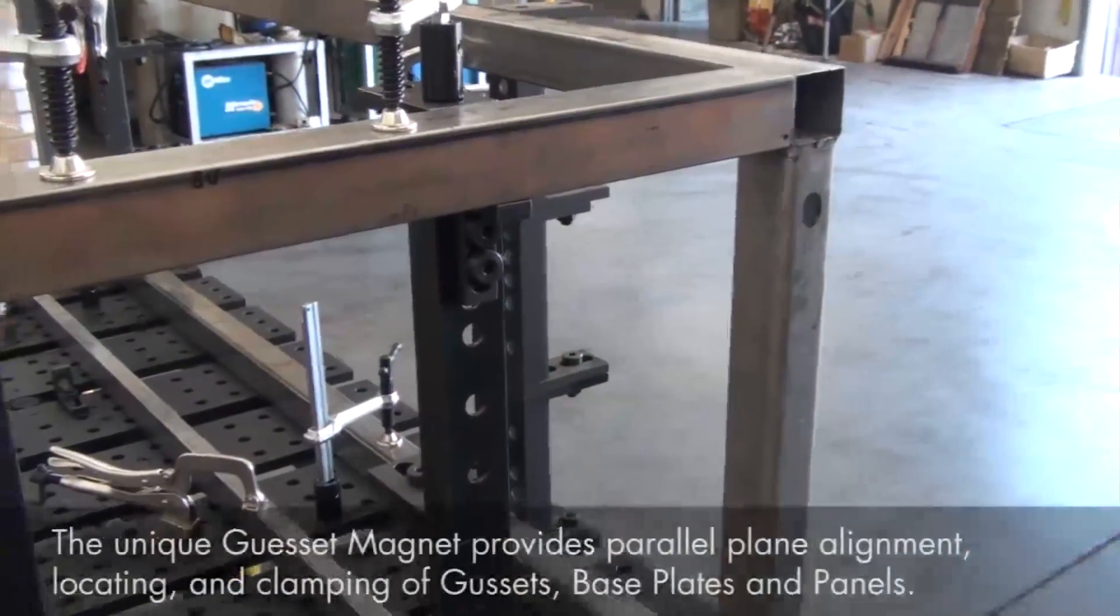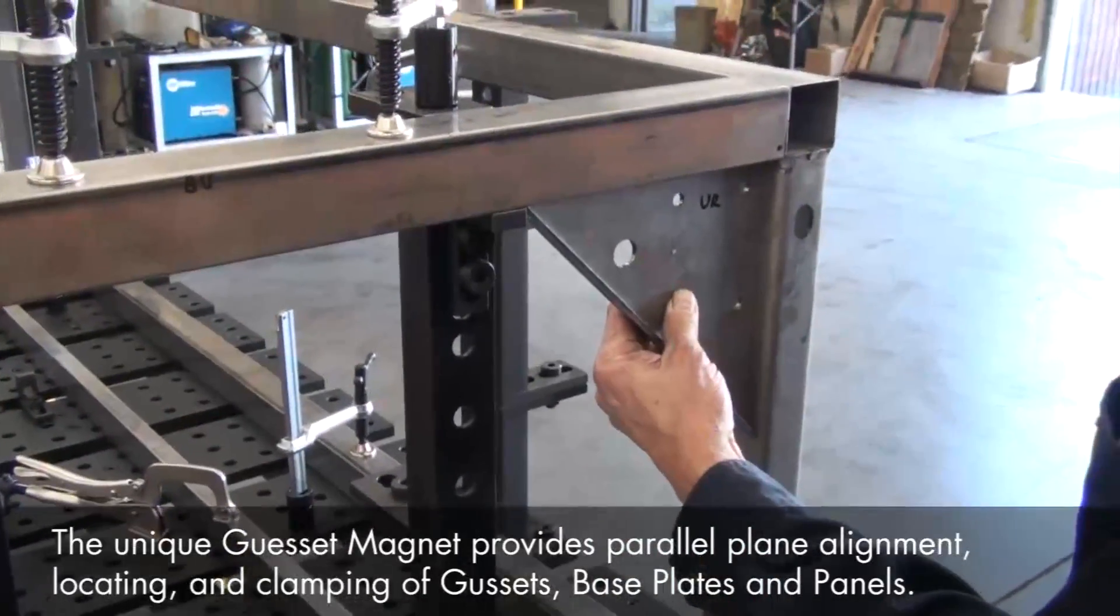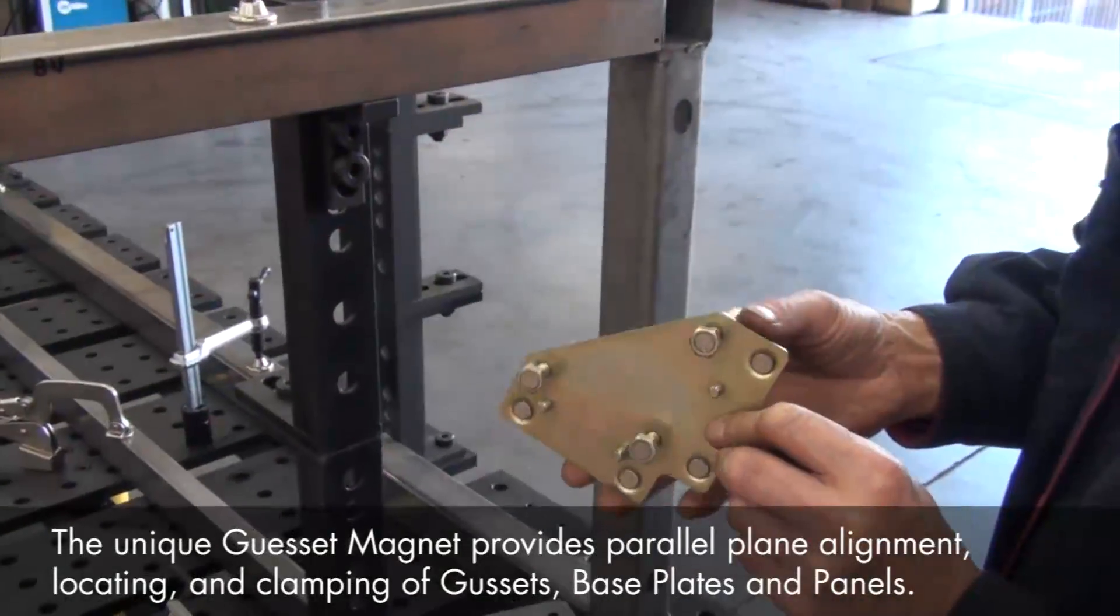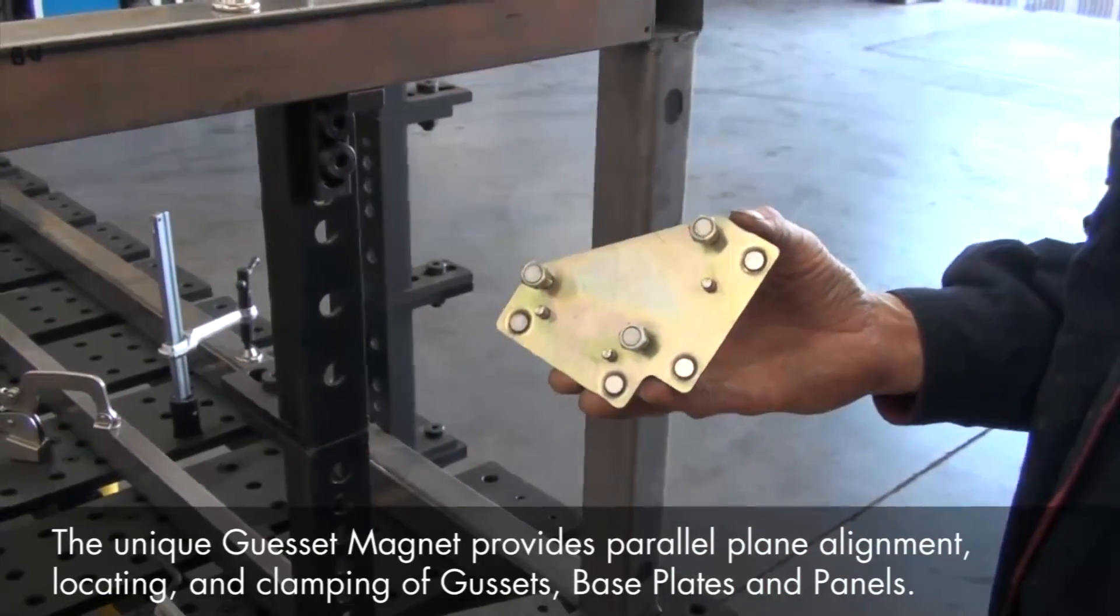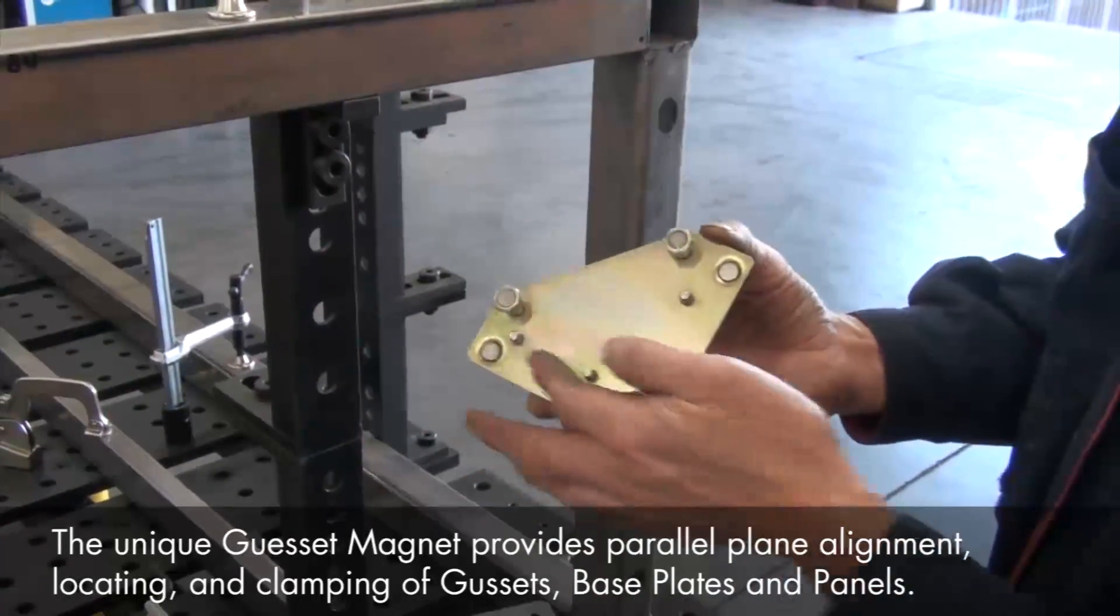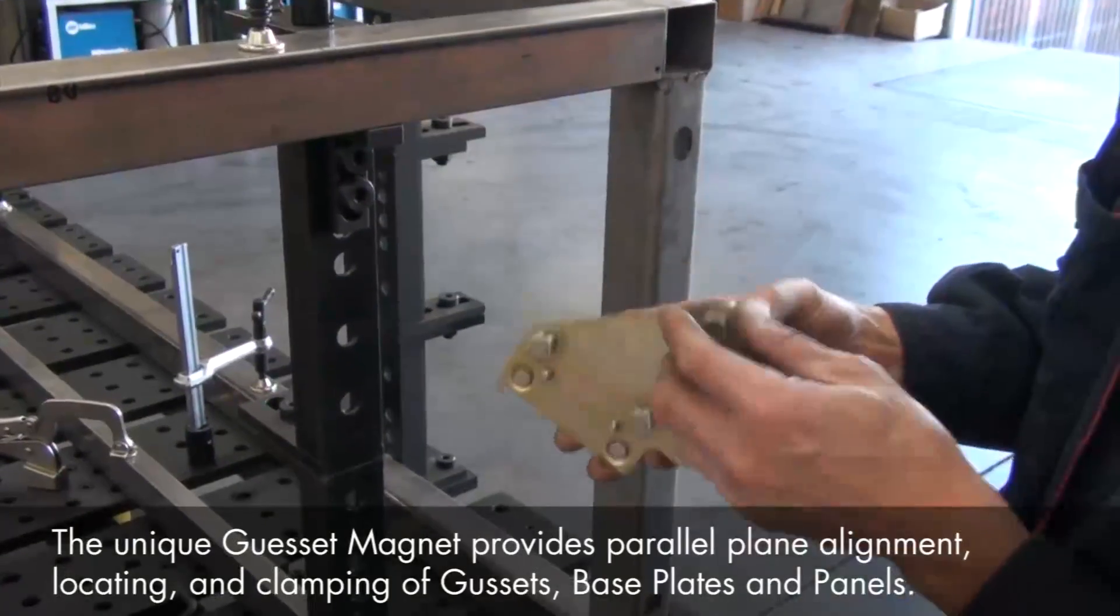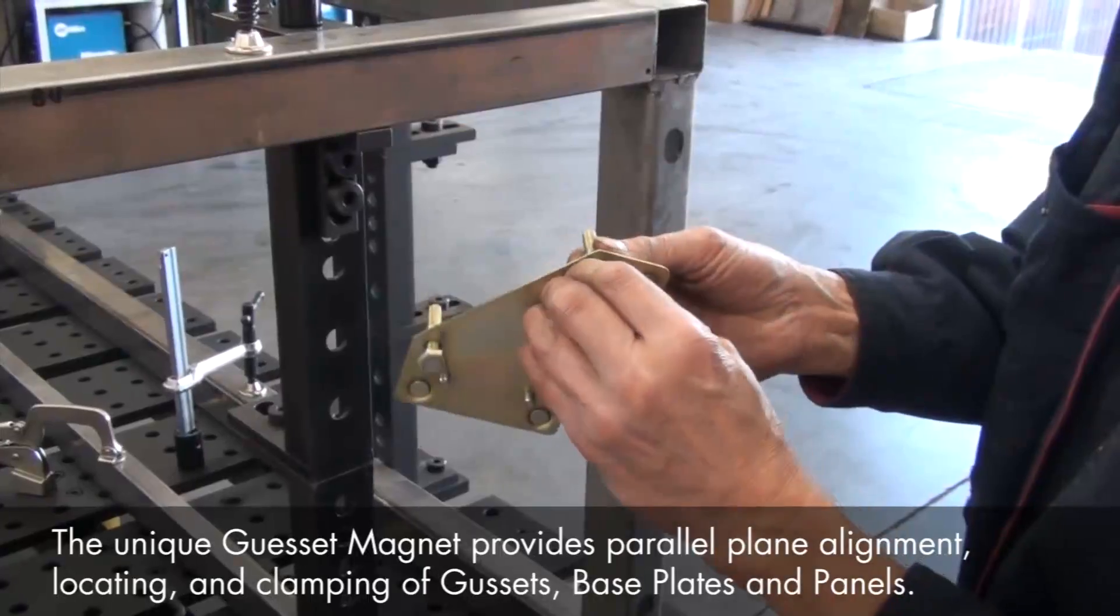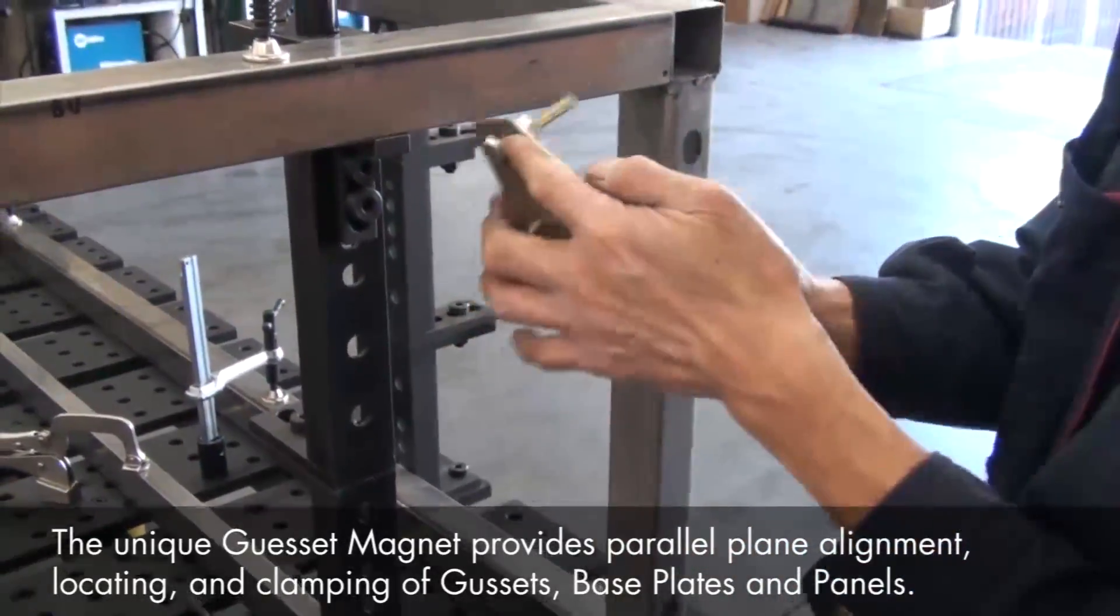To position and clamp these support gussets, we're using the new gusset magnet from our StrongHandTools product line. This low-profile gusset magnet has four disc magnets set in the magnet face to hold against our frame, and three non-magnetic positioning pins to help us quickly align and position the gusset magnet. The three adjustable magnetic hex bolts will hold directly onto the surface area of our gusset panel. We've preset the bolts at the correct depth to hold our panels in a precise location for tack welding.